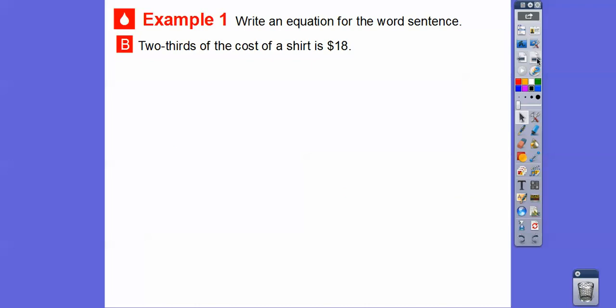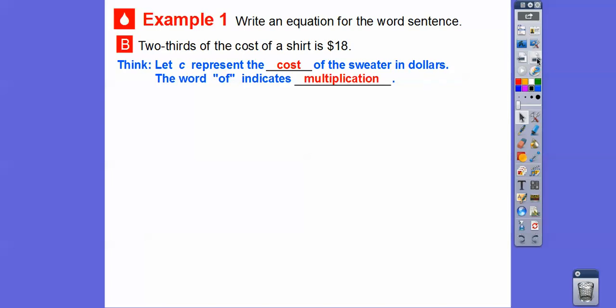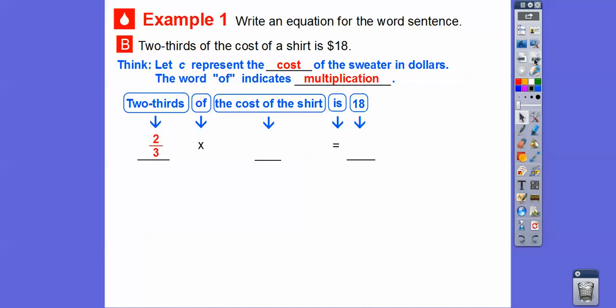Two-thirds of, two-thirds, fraction 2 over 3, of, of means multiply in math. The cost of a shirt is, is means equals, $18. So let's see, represent, we're going to represent the cost of the shirt, and the word of means multiplication. So two-thirds of the cost of the shirt is $18. We'll represent this as two-thirds, the fraction, times the cost of the shirt, which will be C right there, is equal, and then $18. So there's two-thirds times the cost of the shirt C is, and then put the $18 in there. So there's our equation right there.